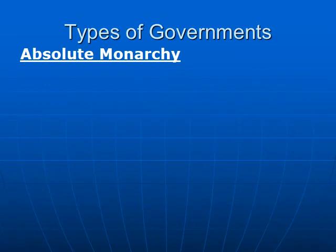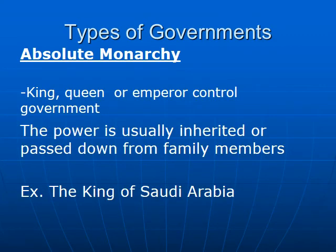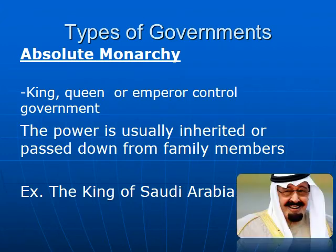Look at the absolute monarchy. This is the king or queen, and power gets passed down through the family, so the family stays in charge. The king of Saudi Arabia is an example.